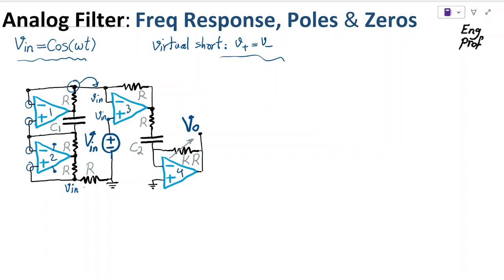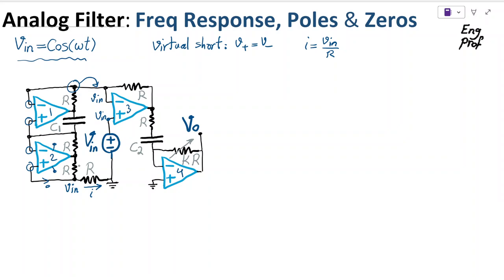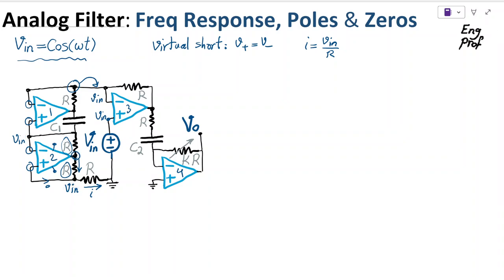With V_in there, this current can be computed — let's call it current i. Current i equals V_in over R, because that is only voltage V_in across a resistor R. Now nothing can go through the input terminal of an ideal op-amp, therefore we have current i flowing this way. Because these two resistors are the same value and on one side both have V_in, and on the other side they share a common node, the voltage drop across these two resistors should be the same.